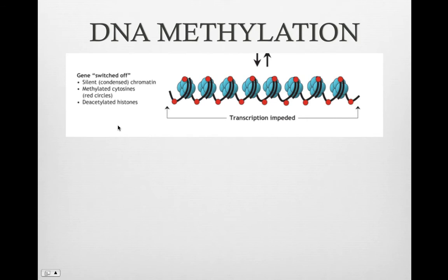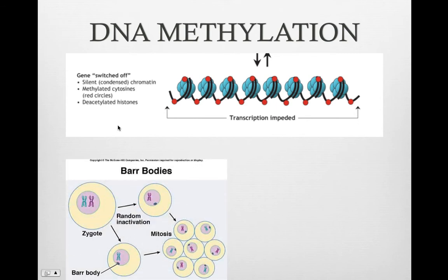DNA methylation has the opposite effect. Methyl groups, CH3, attach to the bases in DNA, usually to the cytosine bases. This inactivates the gene. For example, an inactive X in mammals, called a Barr body, is highly methylated. One X in each cell becomes inactivated during embryonic development. In the ovaries, both Xs are active. So half of the female cells have one X active and the other half has the other X active. All cells from there have the same Barr body.